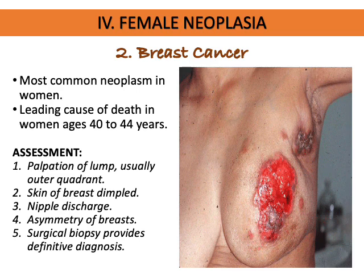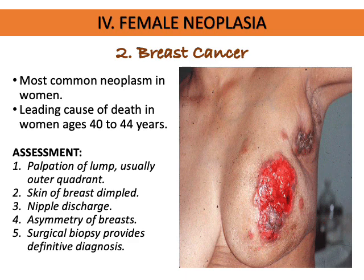Breast cancer is the most common neoplasm in women and the leading cause of death in women ages 40 to 44 years old. Assessment findings include palpation of a lump, usually in the upper outer quadrant — so during breast self-exam, include the axilla. The skin may be dimpled, there may be discharge that is not breast milk, and there is an obvious asymmetry of the breasts.